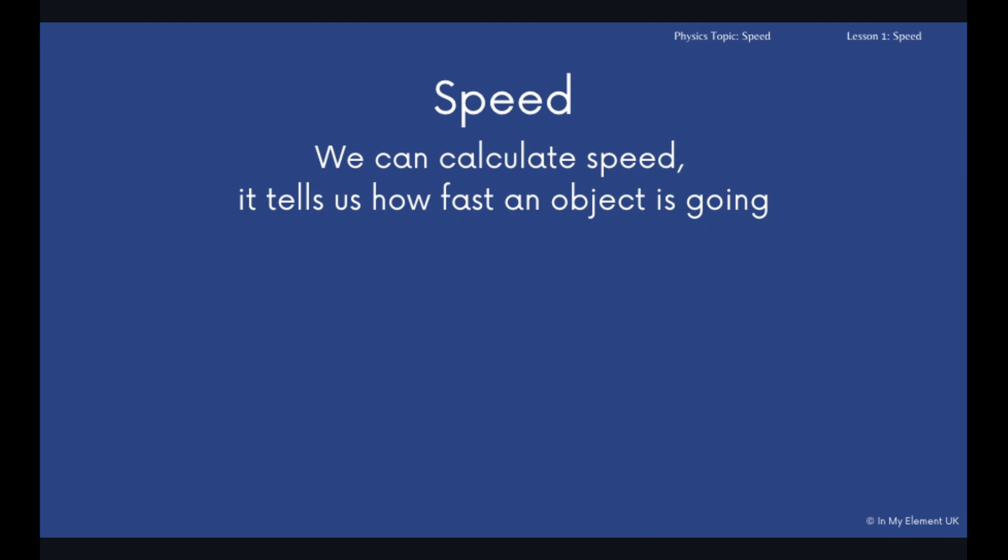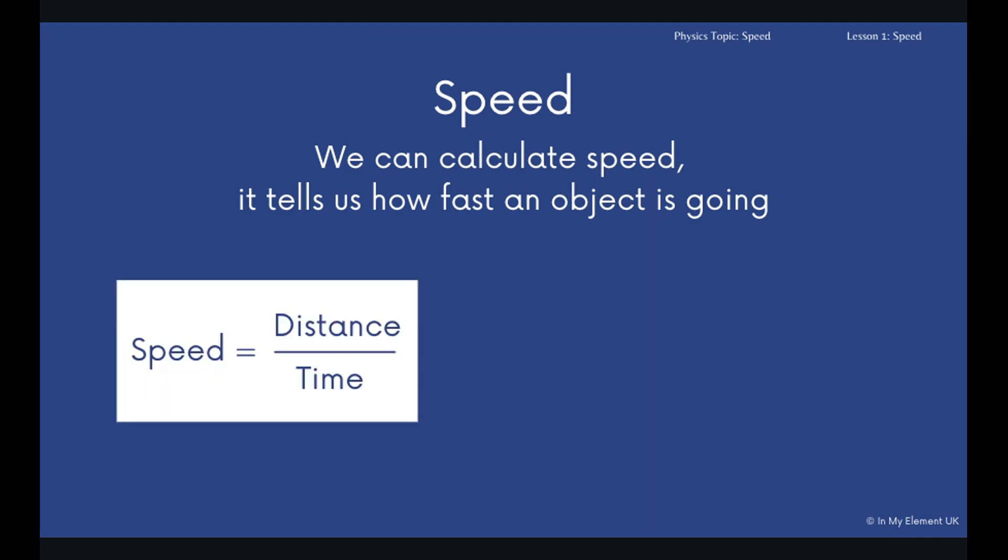To do this, you need to know at least two things to calculate speed: you need to know the distance the object travels and the time it's taken to travel that distance. Now you can write the equation like this: speed equals distance over time. Something that we really recommend is that you learn this formula triangle here. So the D represents distance, S for speed, T for time.